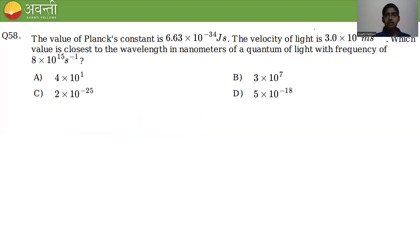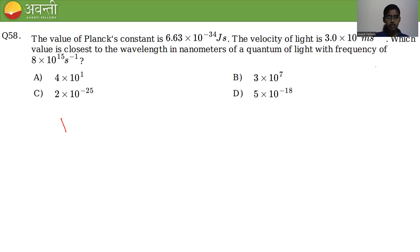Question number 58: Planck's constant h = 6.63 × 10⁻³⁴ J·s, speed of light c = 3 × 10⁸ m/s. The frequency is 8 × 10¹⁵ per second. We are asked to find the wavelength λ in nanometers. We use the formula λ = c/ν.